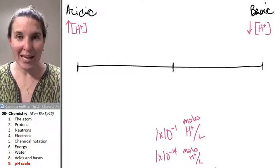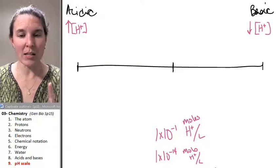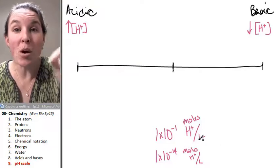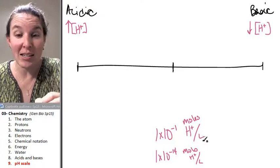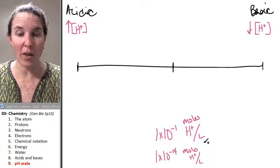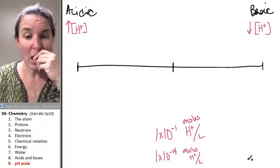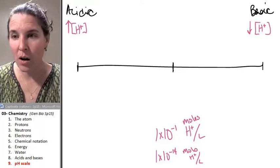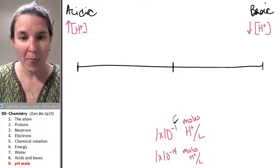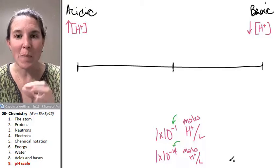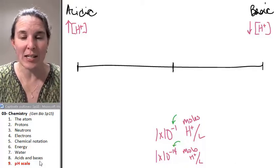Before you do anything, I need to know which number is bigger. Which number indicates more hydrogen ions in that solution? Which one is a more concentrated solution with hydrogen ions? And hopefully, you know, the negative exponent. Do you see it?